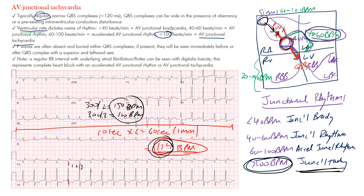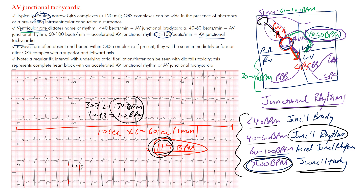To review: AV junctional tachycardia is a regular, often narrow complex tachycardia with a ventricular rate over 100 beats per minute. P waves are often absent or buried within the QRS complex; if present, they may appear immediately before or after with altered morphology and a shifted axis. When differentiating junctional rhythms based on rate: less than 40 is junctional bradycardia, 40 to 60 is junctional rhythm, 60 to 100 is accelerated junctional rhythm, and over 100 is AV junctional tachycardia.